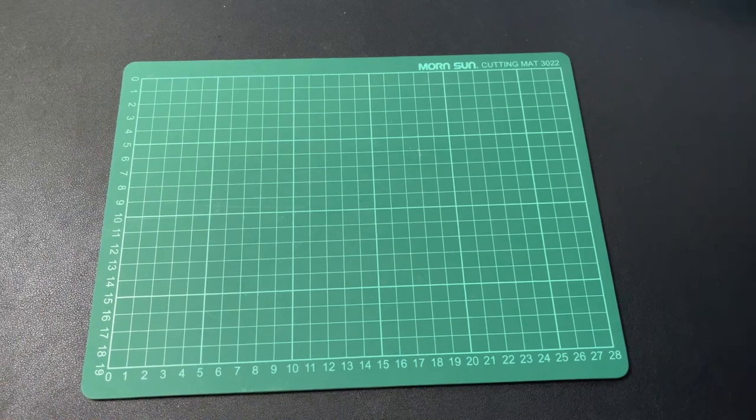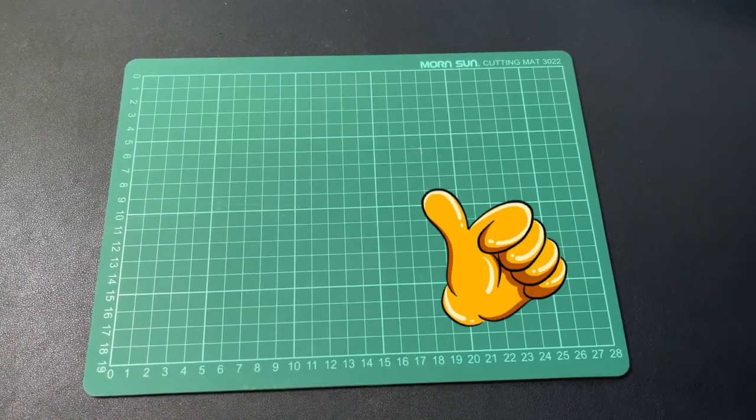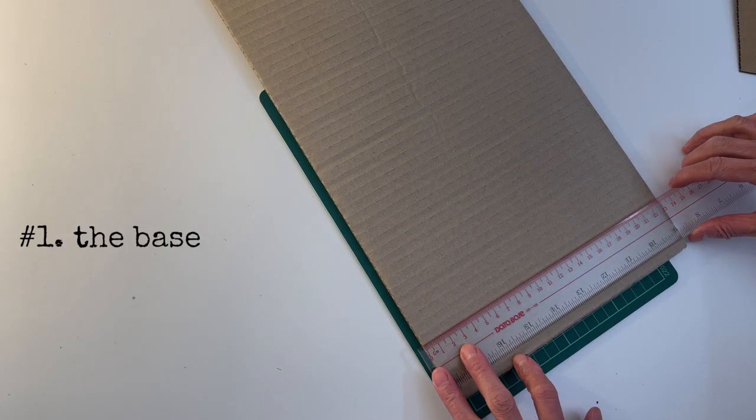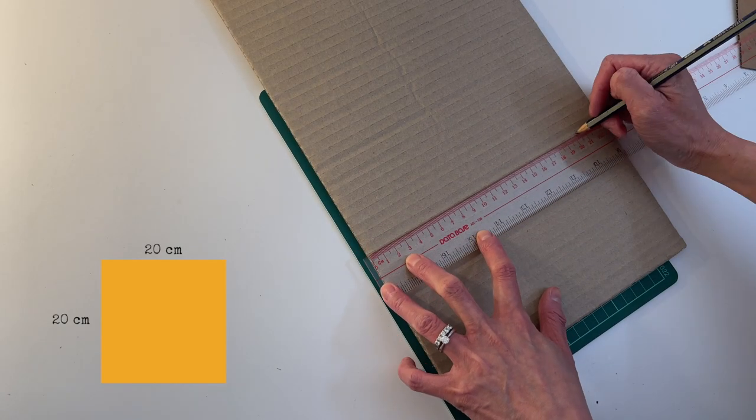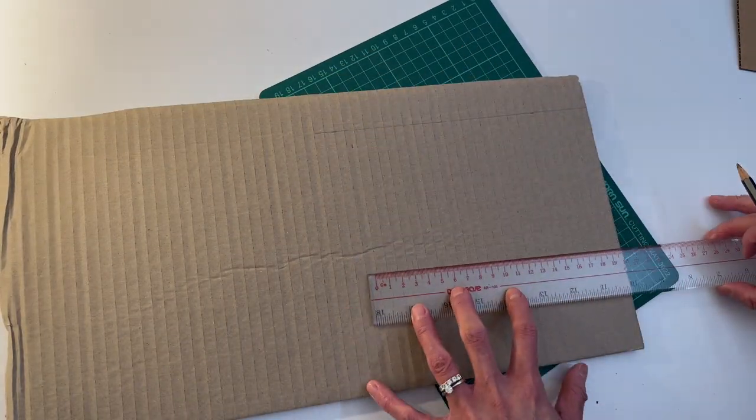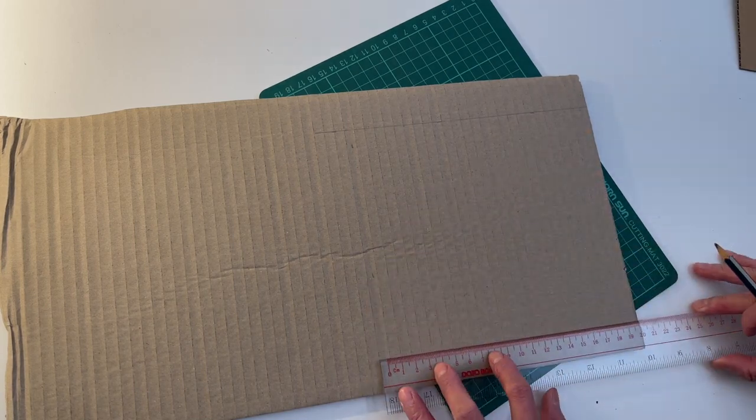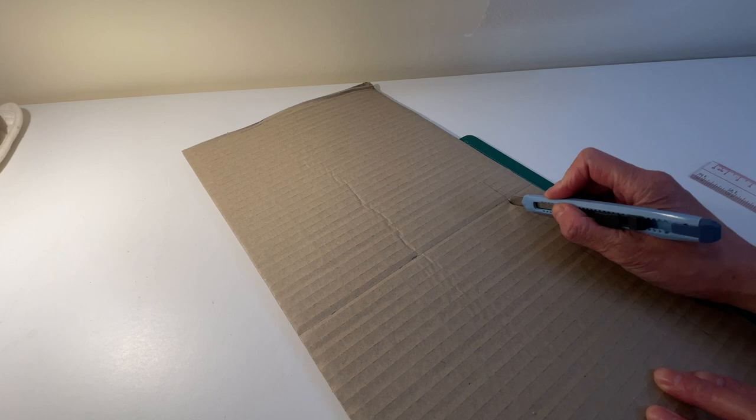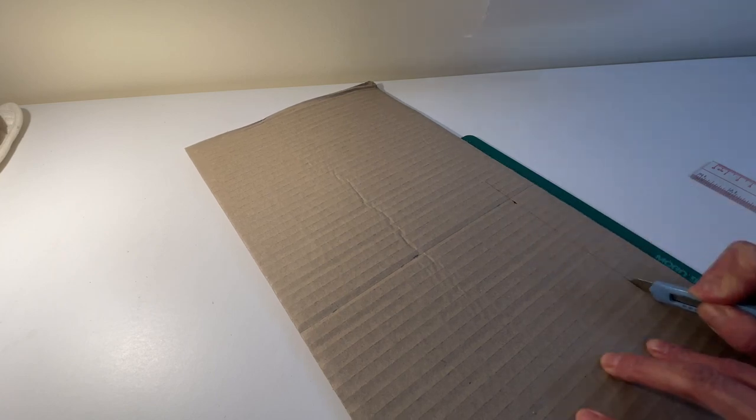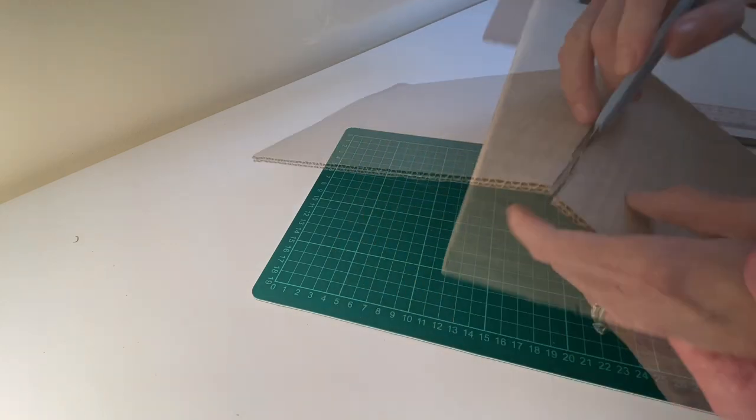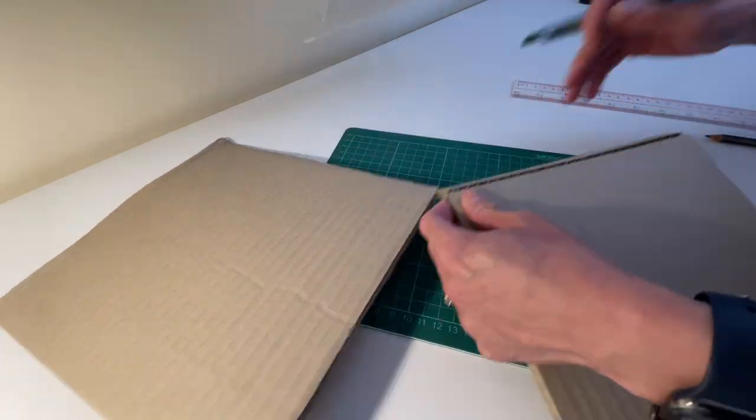Step number three: cut out the five pieces. Piece number one is the base. I will need a 20 centimeters by 20 centimeters square piece. Try to measure the pieces as accurately as you can so that it will be a lot easier when you assemble all five pieces together. Then cut it out carefully using a craft knife. Don't forget to place the cutting mat on the work surface to avoid any damage on it.